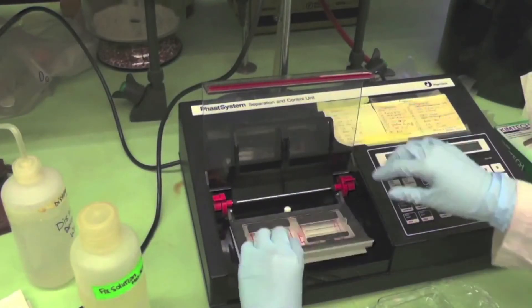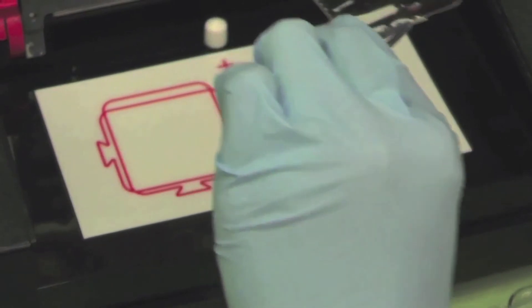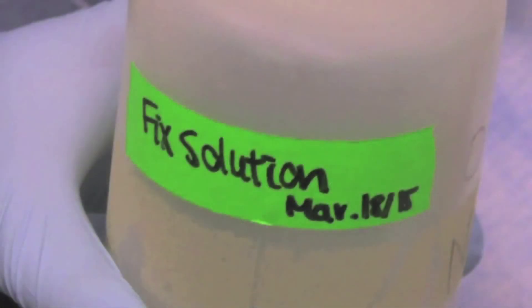Lift the sample applicator arm and electrode assembly so you can remove the gel. Place the gel in a square petri dish, add the fixing solution and leave for 5 minutes at room temperature.